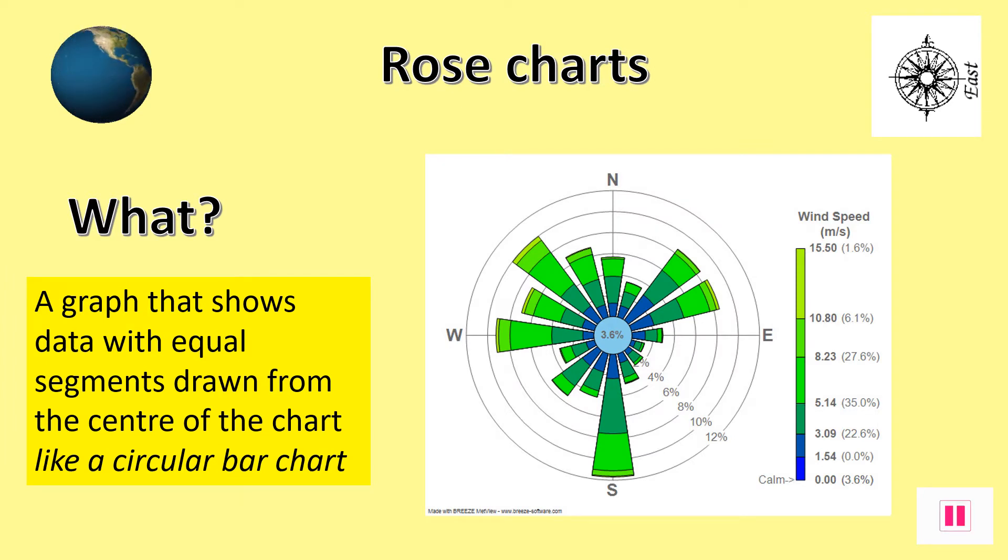Rose charts are very similar to radial graphs. They show equal segments drawn outwards from the centre of the chart. With the example we can see that the smallest amount of wind generally comes from the south-east with mainly between 1 and 5.14 metres per second.